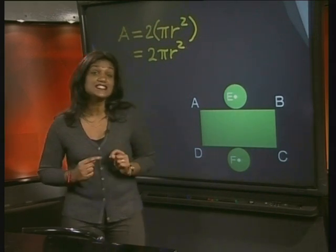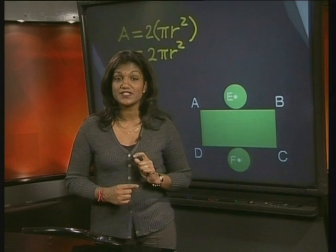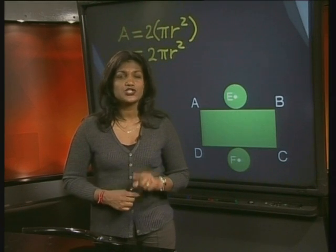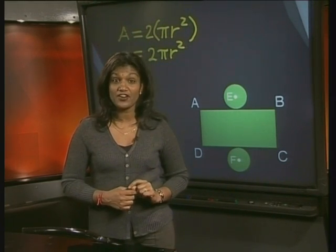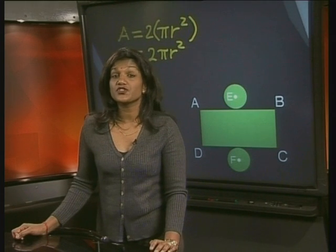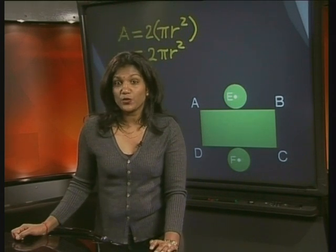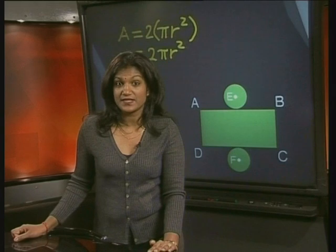Now, we still need to calculate the formula for the rectangular part of the cylinder. Do you remember what the formula for the area of a rectangle is? Its area is equal to base times perpendicular height. So, to find the area, we will need to know the base and the height of the rectangle.